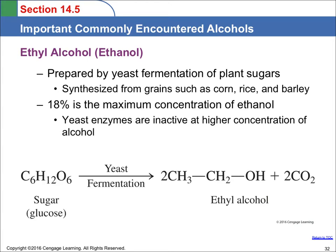Ethanol is made by yeast fermentation. If you take grain, corn, rice, and barley, you can ferment it using yeast to produce ethanol. 18% is the highest concentration you can get from yeast fermentation; to get any higher alcohol concentration, it would have to be distilled. Here's the reaction for fermentation: the sugar present in the plant material is converted to ethanol by the yeast, as well as CO2. If you've ever done fermentation, you know that some gas is produced — that gas is carbon dioxide.